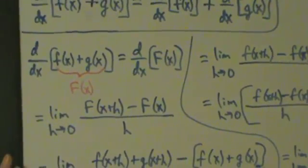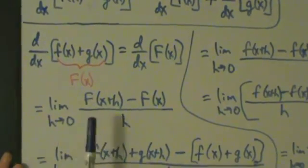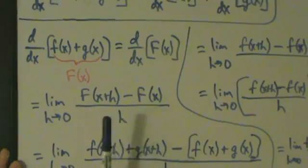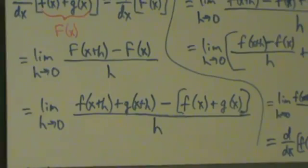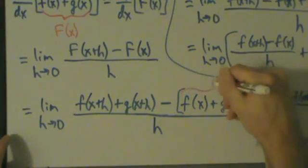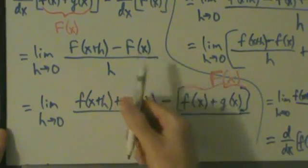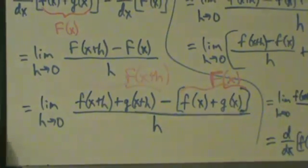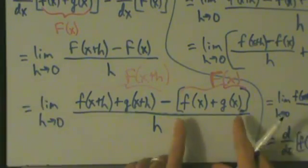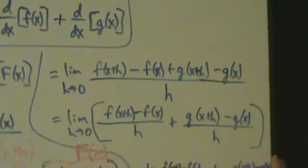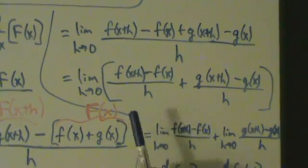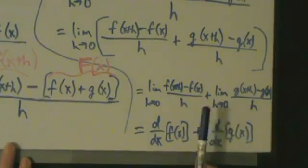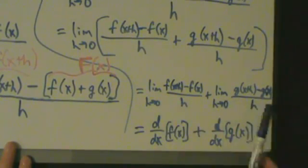To recap: we started with d/dx of (f(x) plus g(x)), called that sum big F, then used the limit definition. We substituted back into little f and g, used square brackets carefully, dropped the brackets by distributing the minus sign, grouped the f's together and the g's together, split into two fractions, then distributed the limit — writing the limit of a sum as the sum of the limits — and recognized each as the respective derivative.